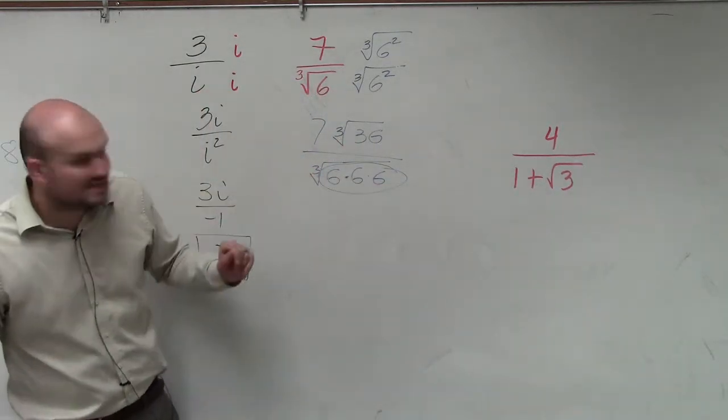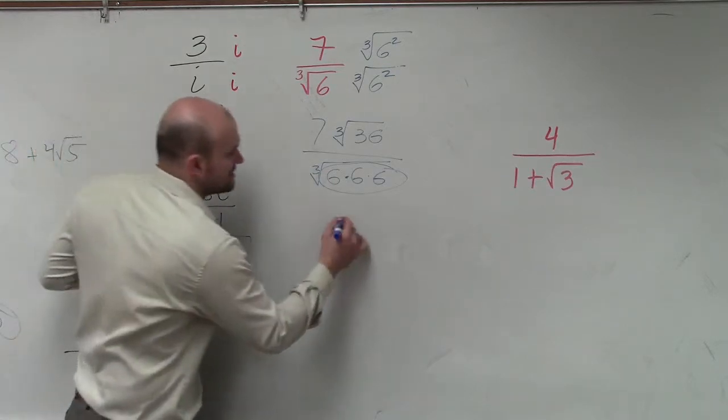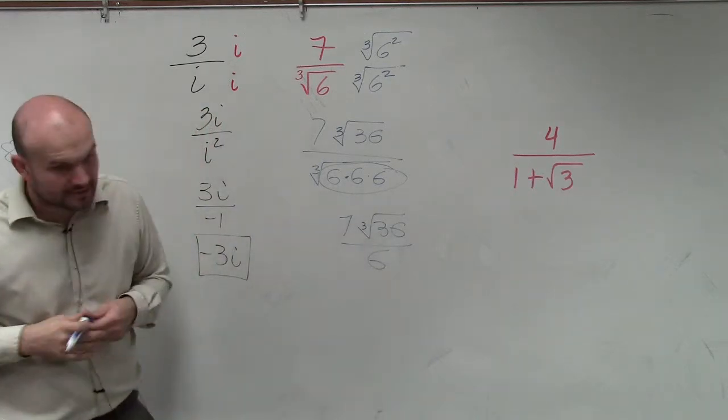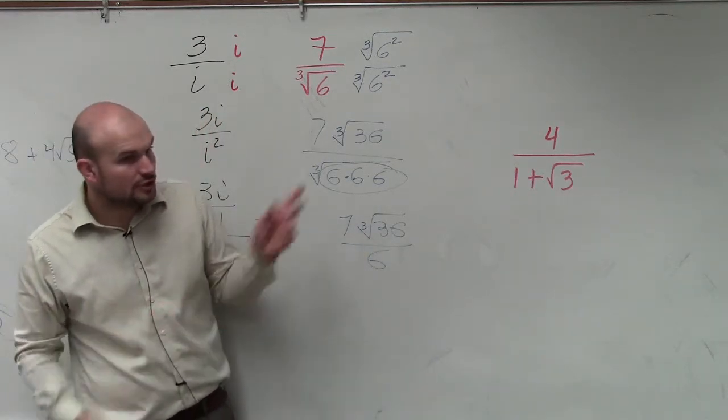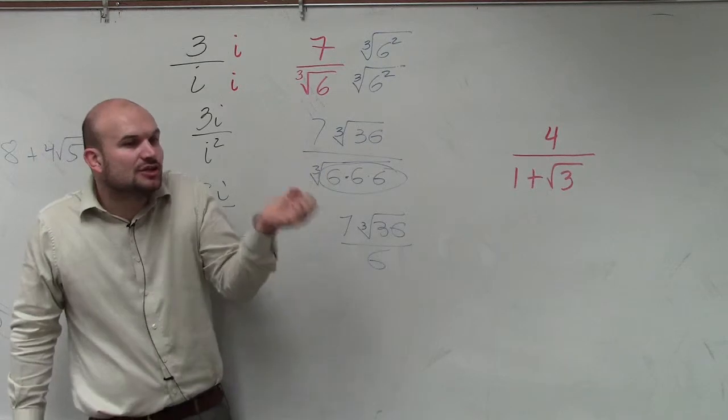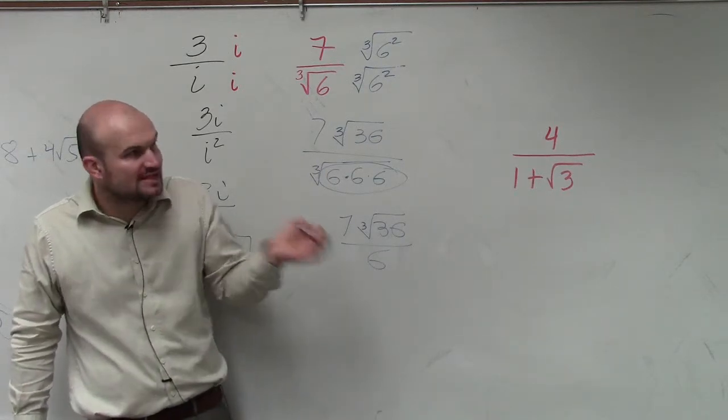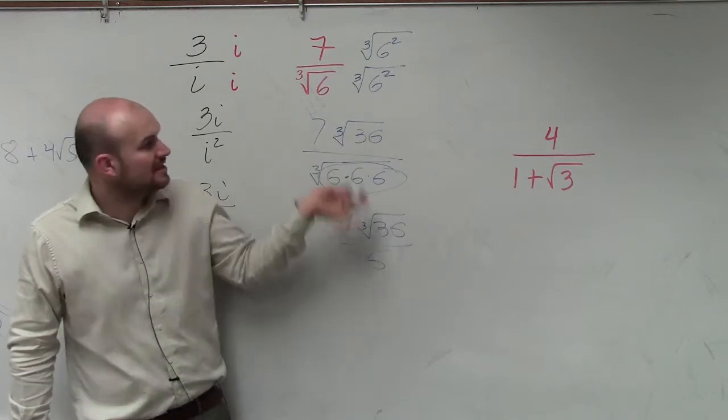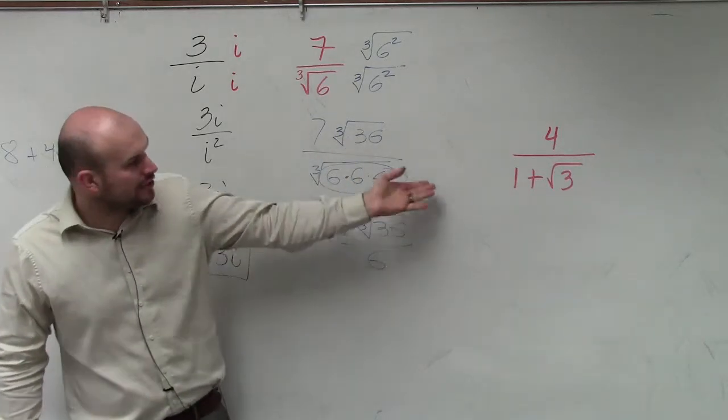The cube root of 6 times 6 times 6 is just going to be 6. 6 times 6 times 6, the cube root. What does the cube root ask? The cube root says, what number multiplied by itself three times gives you your radicand?